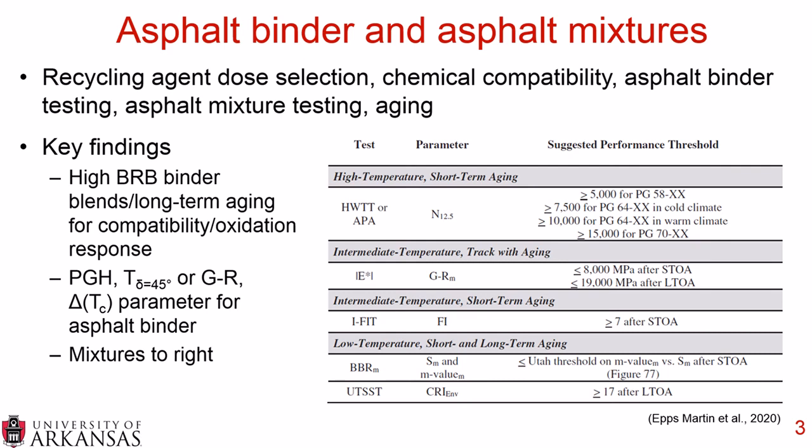Here are the suggested performance thresholds for the asphalt mixture tests. For high temperature testing, which included loaded wheel testing, they recommend looking at N12.5. At intermediate temperature, we have the Glover Rho mixture and the flexibility index. For low temperature, you have the BBR mixture — both the S sub M and the M value sub M — as well as the confined low temperature tests where you get the CRI environmental parameter.